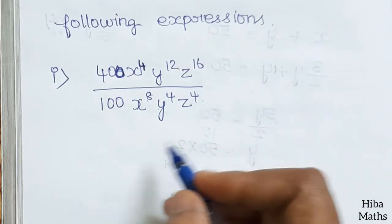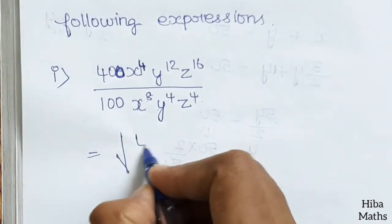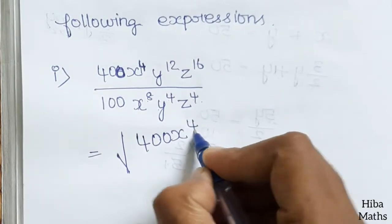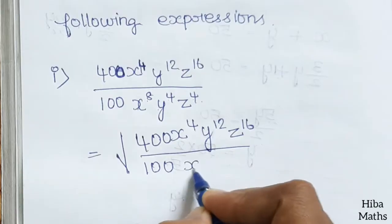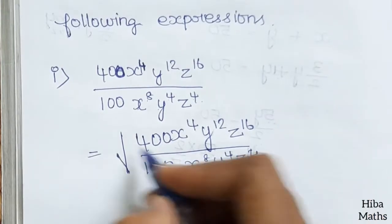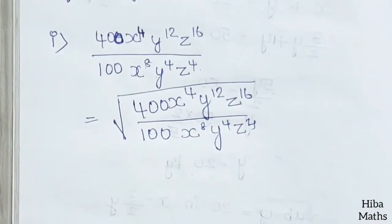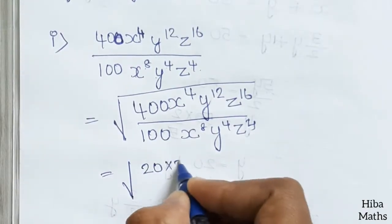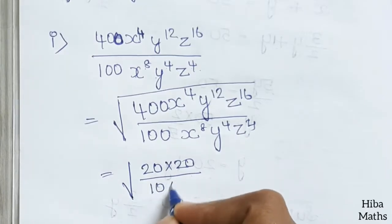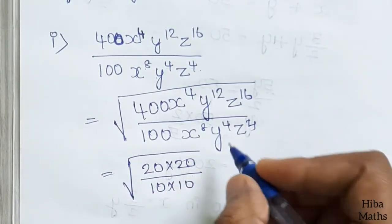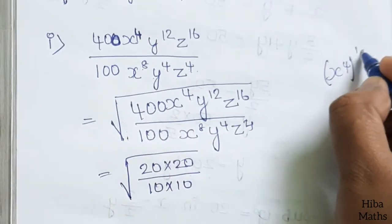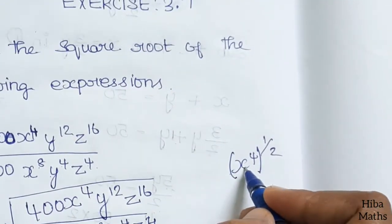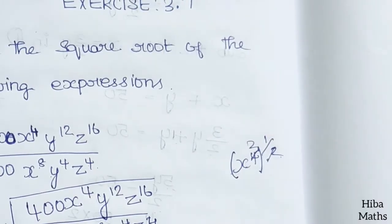We apply the square root to 400 x power 4, y power 12, z power 16, divided by 100 x power 8, y power 4, z power 4. To find the square root, we divide each power by 2. So for x power 4, 4 divided by 2 gives x power 2.